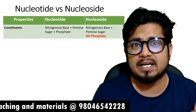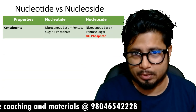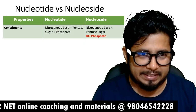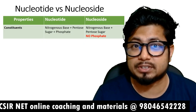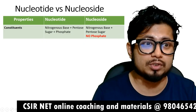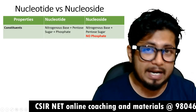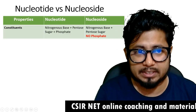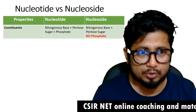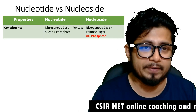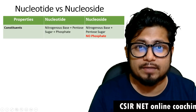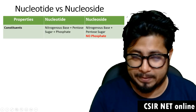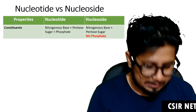The first thing is regarding the constituents of nucleotide and nucleoside. The nucleotide is composed of three things: one is the nitrogenous base, the second is the pentose sugar — the ribose sugar — and then we have a phosphate. So nitrogenous base, ribose sugar, and a phosphate. While nucleoside lacks the phosphate; it carries only the nitrogenous base and a ribose sugar.